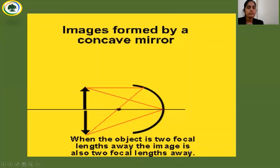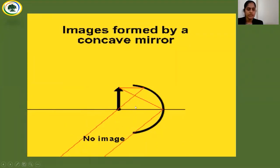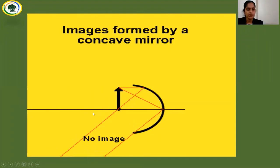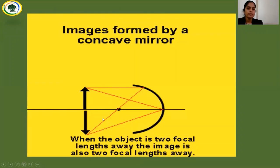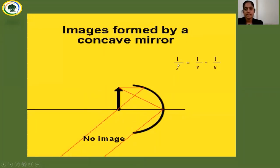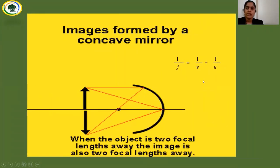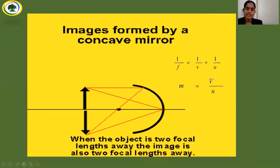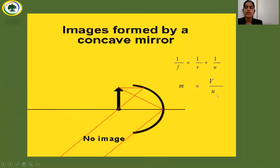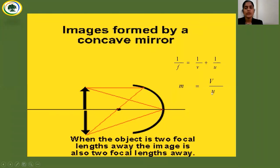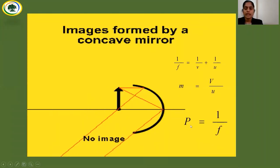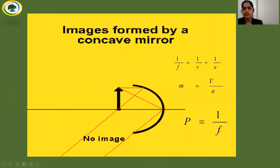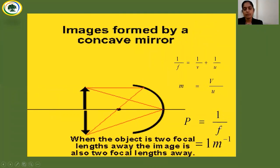Related to the concave mirror, we get different images when the object is placed at different positions. The mirror equation is 1 upon f equals 1 upon v plus 1 upon u, which we learned last year. The lateral magnification M equals v upon u, the ratio of image distance to object distance. The power of the lens is 1 upon f, with SI unit meter inverse.